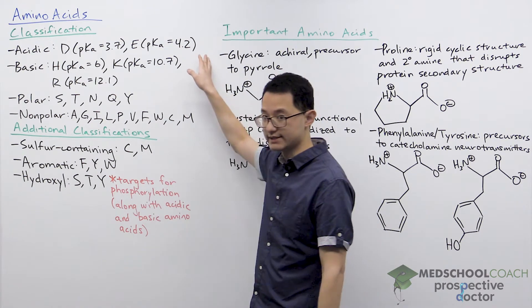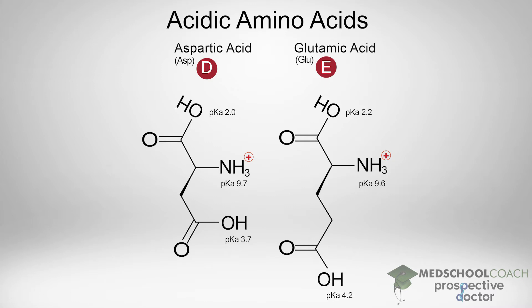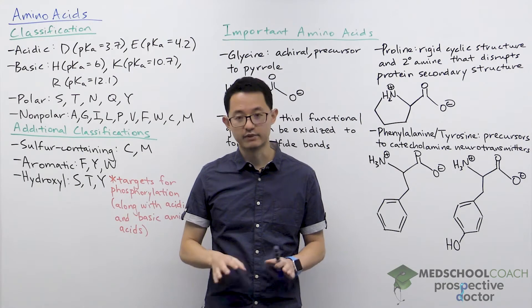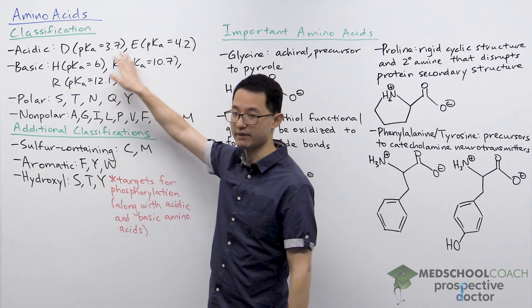We have two acidic amino acids: D (aspartic acid), which has a side chain pKa of 3.7, and E (glutamic acid), which has a side chain pKa of 4.2. Aspartic acid and glutamic acid refer to the versions where their side chains are protonated in the carboxylic acid form. The terms aspartate and glutamate refer to the same amino acids in their deprotonated forms, where the carboxylic acid has been deprotonated to form the carboxylate.